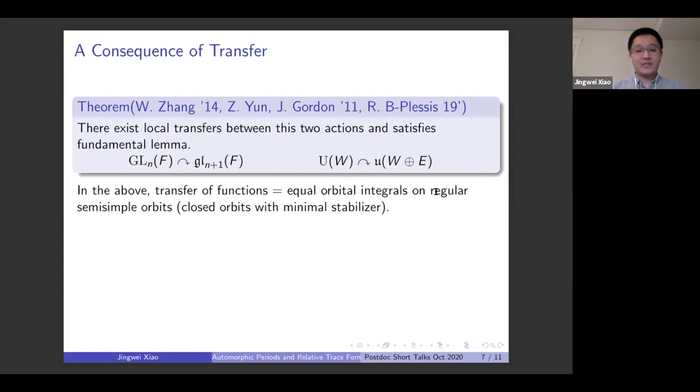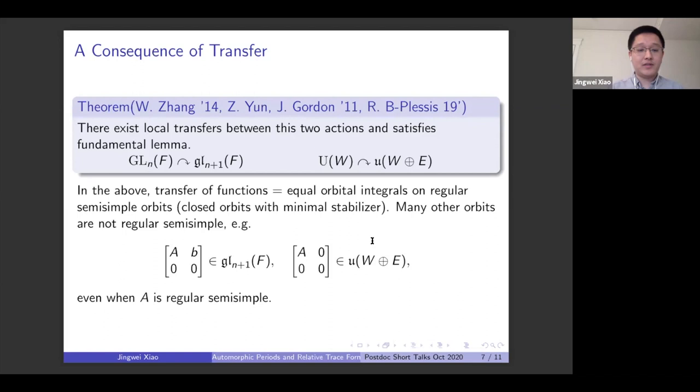when you say like functions are matching, the same thing is saying they have the same orbital integrals on orbits that are called regular semisimple, which by definition means orbits are closed and it has the minimal dimensional stabilizer. The reason is because for the other orbits, like more degenerate orbits, the orbital integral on one hand is sometimes not well defined and on the other hand, there's no clear ways of matching orbits on both sides. So the definition only involves those regular semisimple orbits.